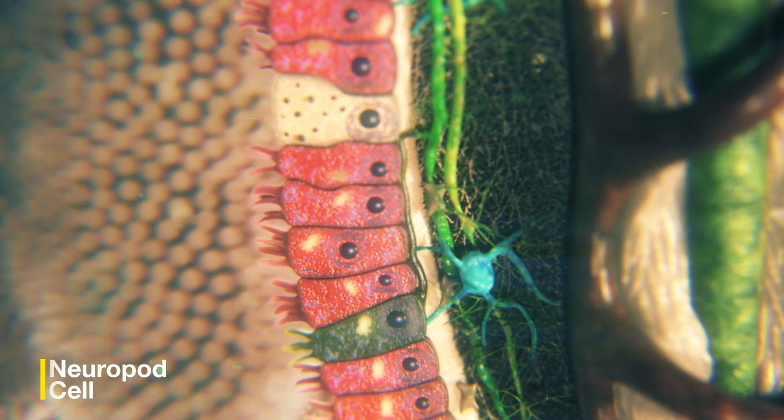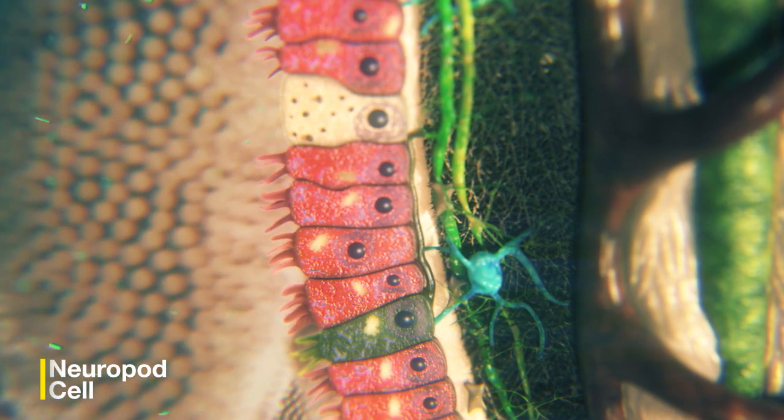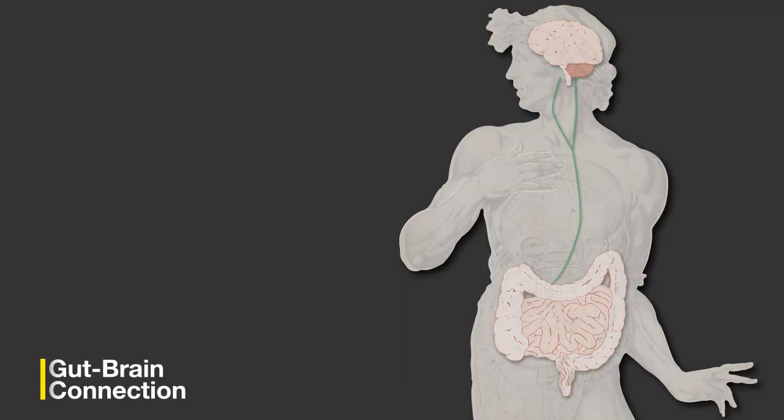Vagal neurons carry the sensory information to the brain stem, linking the signals generated inside the small intestine to the brain.